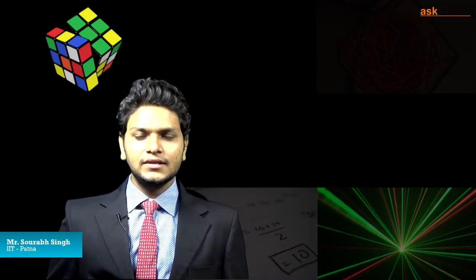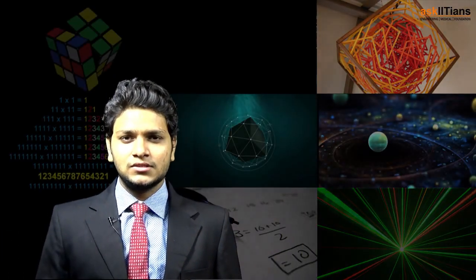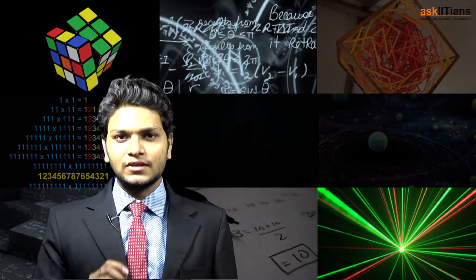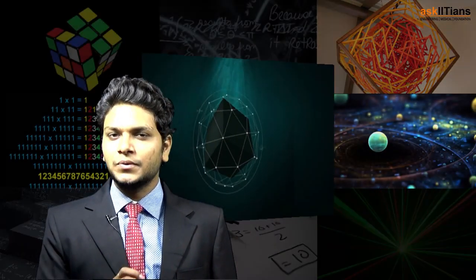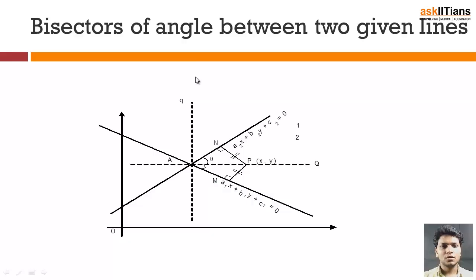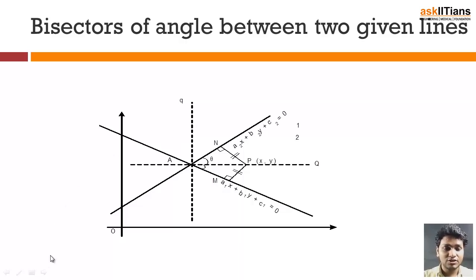Welcome back. In this video lecture we are going to cover the concept of equation of angle bisectors of two straight lines. This chapter has always attracted questions in all previous JEE Mains and JEE Advanced question papers. We will try to understand the basic concept involved by finding the equation of bisectors and see its various applications in terms of questions.